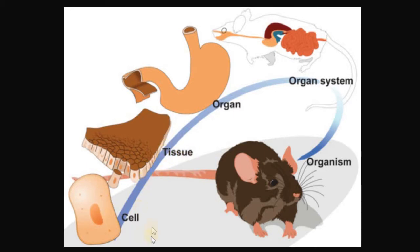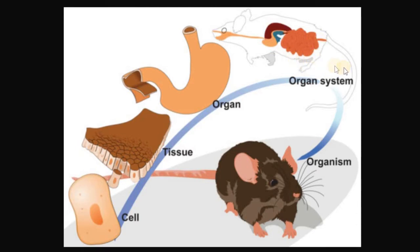Tissue is a group of cells. Likewise, tissues can group together to form organs, so an organ is a group of tissues. Organs can group together to form systems or organ systems, so a system is a group of organs. And obviously, a group of systems is an organism.